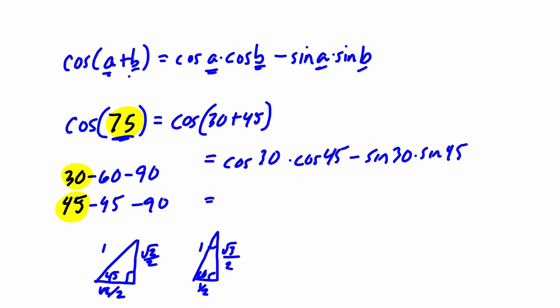And the cosine of 30, let's analyze that first. Here's 30 right here. It's the adjacent side over the hypotenuse. So that's going to be √3 over 2. And then we're multiplying that by the cosine of 45. So 45, √2 over 2 over 1. So that's just √2 over 2.